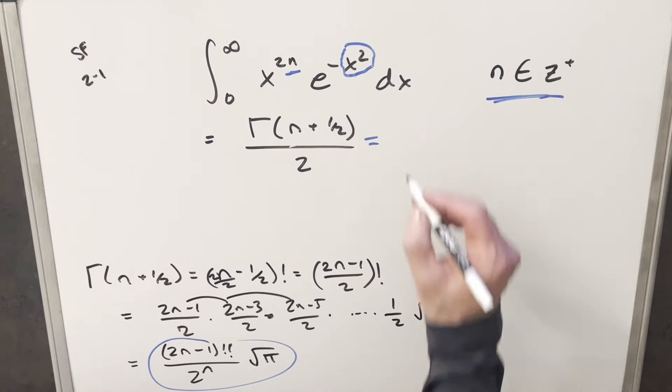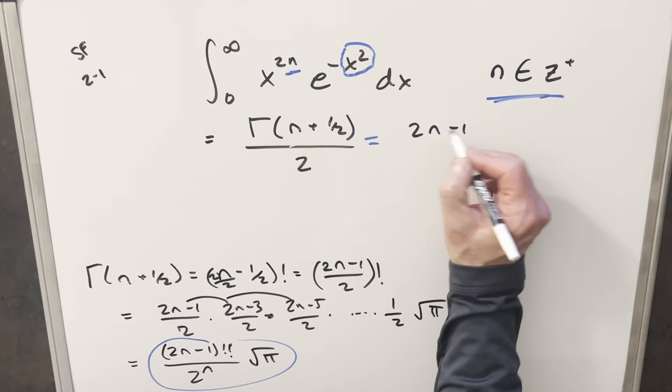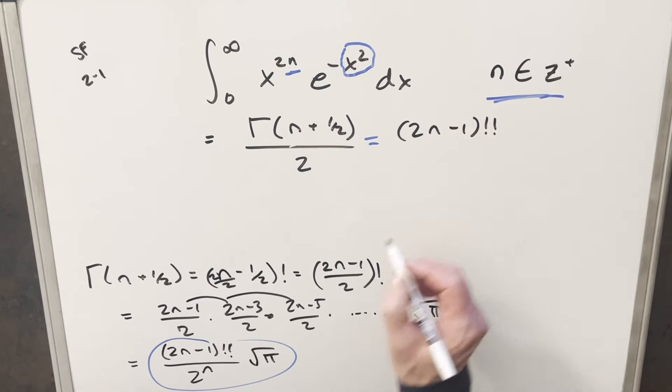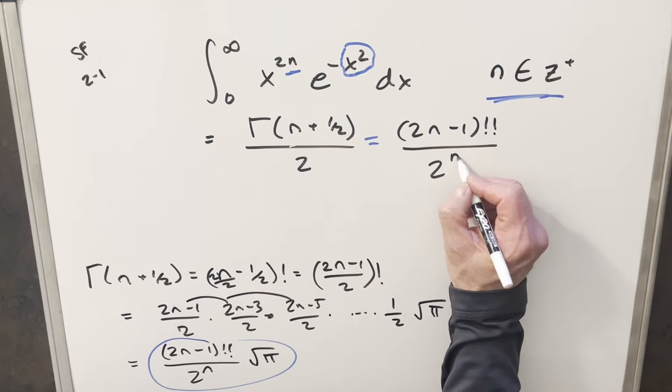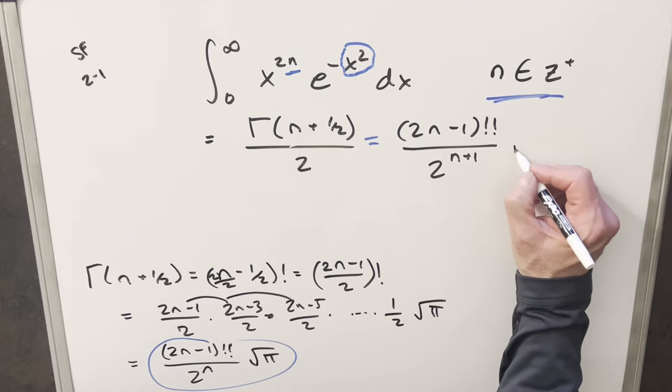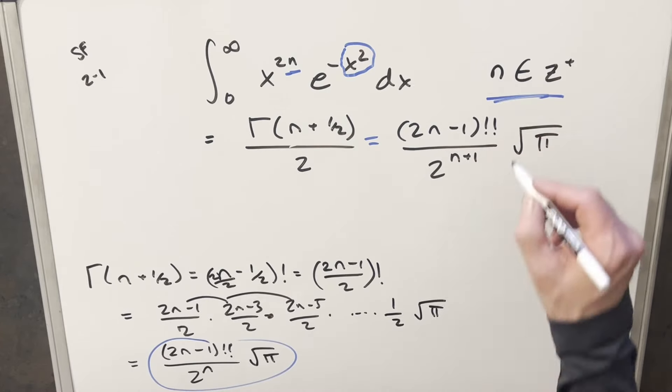Okay, now writing in our value for gamma of n plus 1 half, we're going to have 2n minus 1 double factorial. And then we're going to have this 2 to the n in the denominator, but we're multiplying by 2. So I can write this as 2 to the n plus 1, multiplying those together, times square root of pi. And that's it.